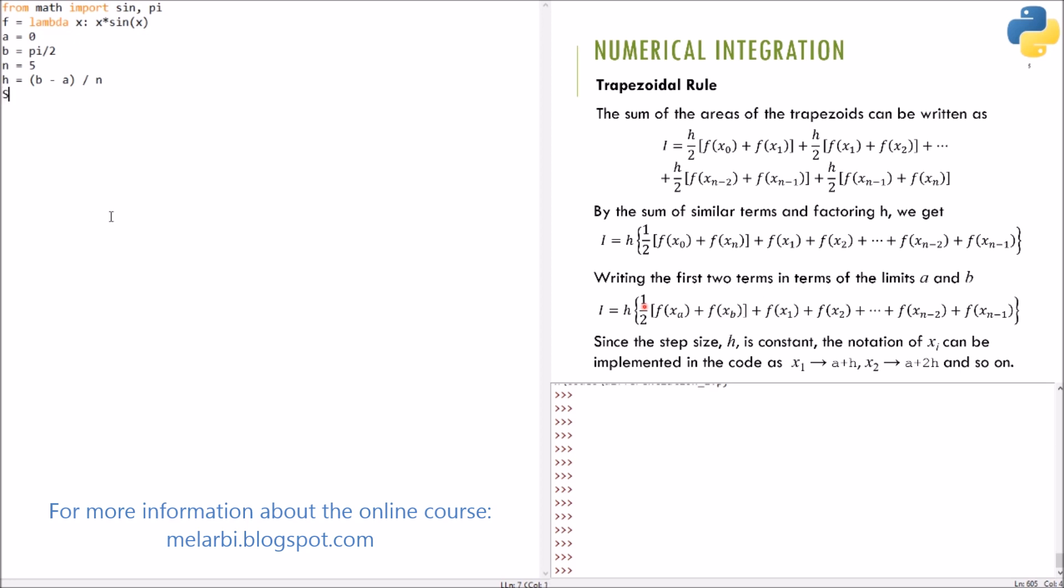Let's say s is the summation variable equals to 0.5 of f of a plus f of b.